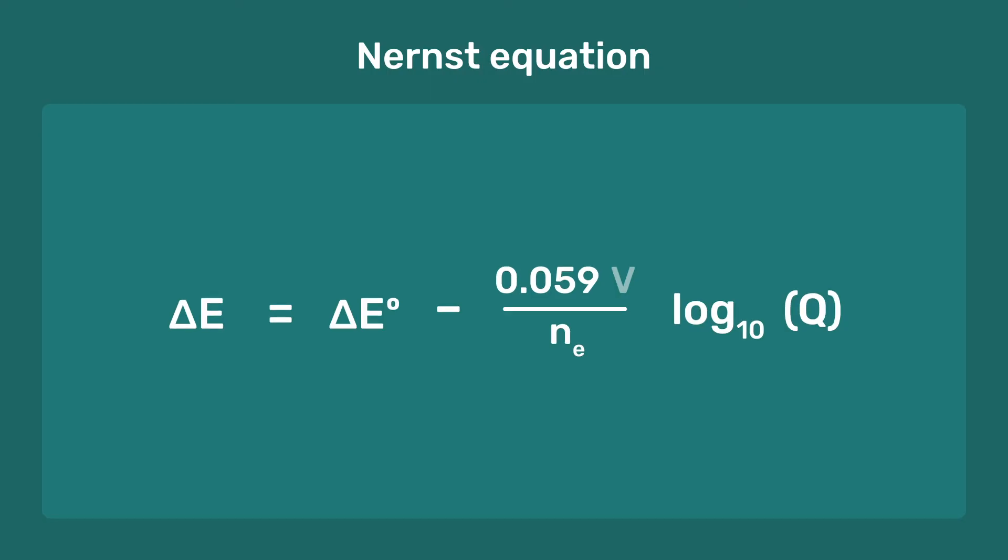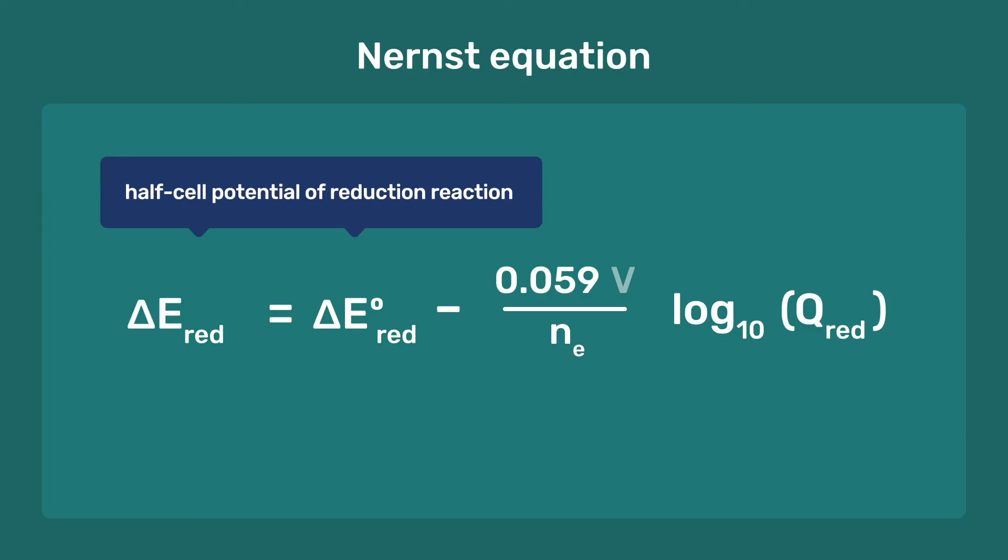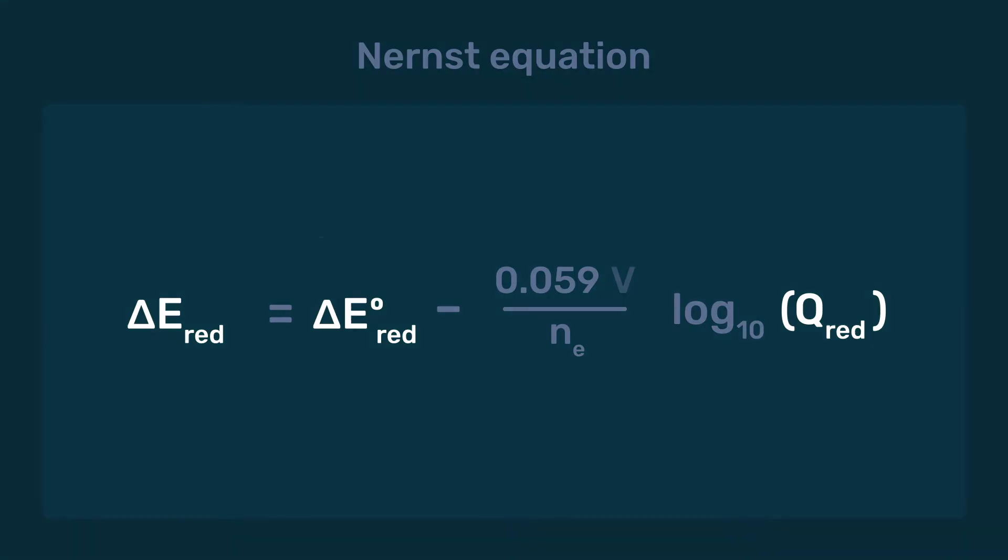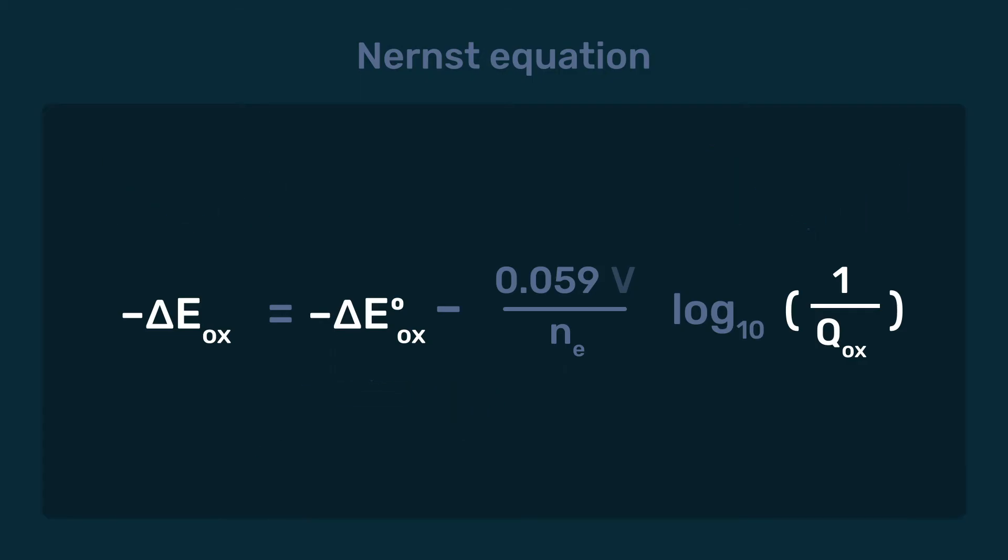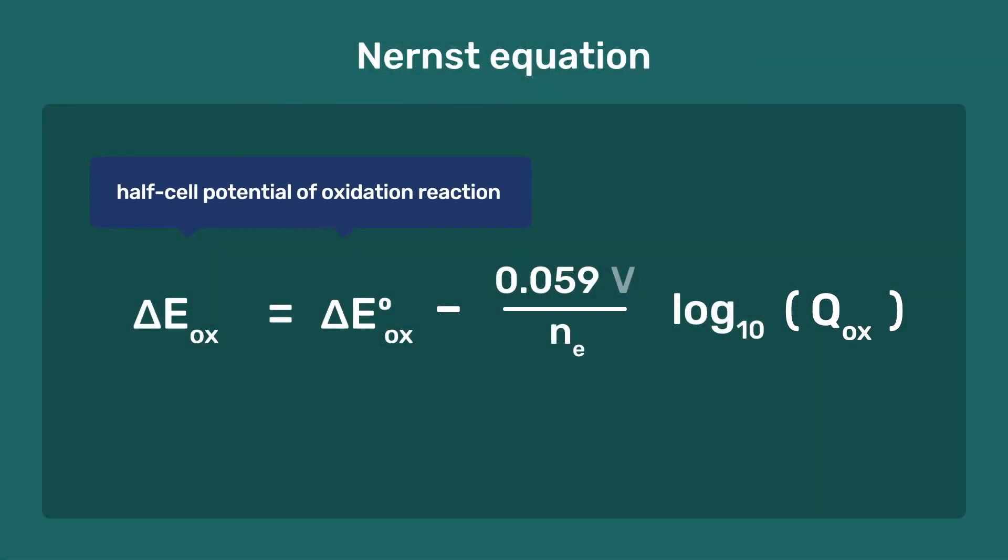In electrochemistry, we work with the half-cell potentials of reduction reactions. If we consider oxidation reactions, then it is necessary to change the sign of the reduction potential to obtain the oxidation potential.